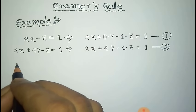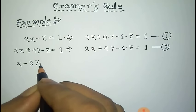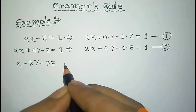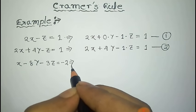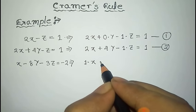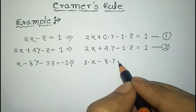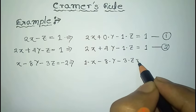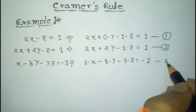The third equation is x minus 8y minus 3z, that is equal to minus 2. This can be written as 1 into x minus 8 into y minus 3 into z, that is equal to minus 2. And this is equation 3.